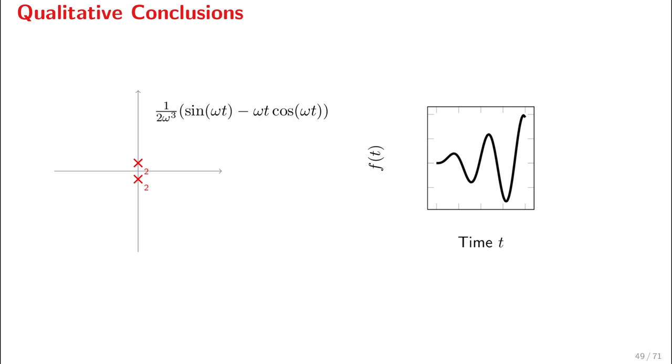But at the same time, the time domain function, the inverse Laplace, grows unbounded. As we change the imaginary part, see what happens. First of all, the frequency changes—the frequency of the oscillation becomes higher with a higher imaginary part. This checks out; this is something we observed previously as well.